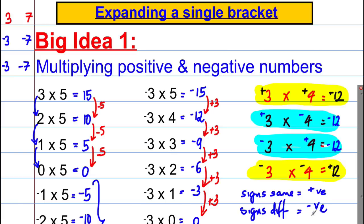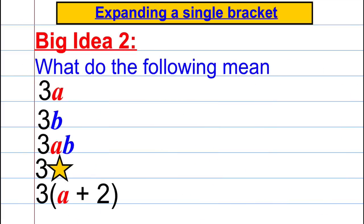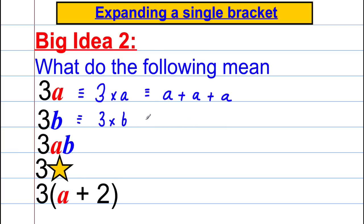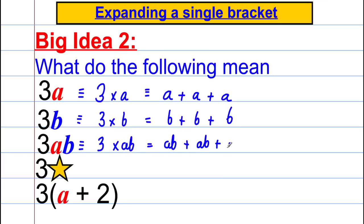Big idea one done. Big idea two: what does the following mean? 3a means 3 multiplied by a, which is also the same as a + a + a. So 3b is 3 multiplied by b, which is b + b + b. Similarly, 3ab is 3 multiplied by ab, which is ab + ab + ab.